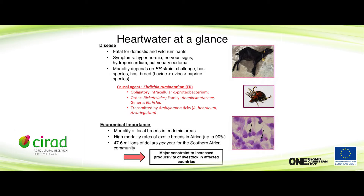It is exclusively transmitted by Amblyomma ticks, and it must replicate in the vector before being transmitted to the animal. However, ticks cannot maintain the bacteria themselves — you need a connection between the ticks and the cattle, sheep, or goats. It's a very important disease economically because of the mortality, but also because of the control measures required to preserve livestock. In South Africa, it costs approximately 50 million dollars every year.